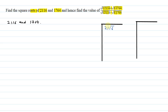We will make pairs using the long division method. First, let's see: 21 — we need to find a perfect square close to it. We see 4 into 4 is 16, so we place 4. The pair gives us 16, and 4 plus 4 is 8.